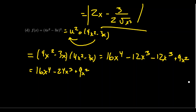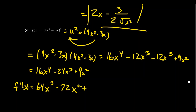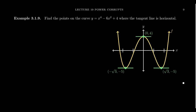Now we're prepped for differentiation. Taking the derivative: 16 times 4 is 64, giving 64x cubed. Then negative 24 times 3 is negative 72, giving negative 72x squared. Lastly, 9 times 2 is 18, giving 18x. So the derivative is 64x cubed minus 72x squared plus 18x.